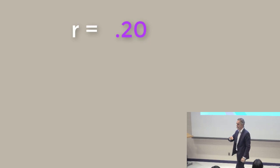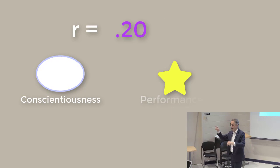Imagine that you have a predictor of 0.20, so the correlation is r equals 0.20 between phenomena one, let's say conscientiousness, and phenomena two, workplace performance. A 0.20 correlation.